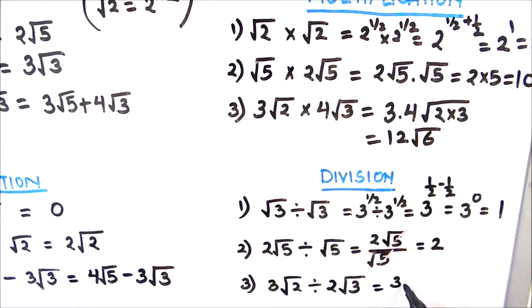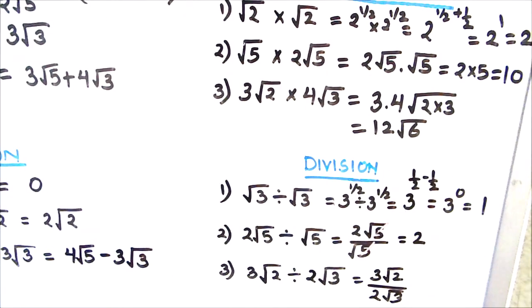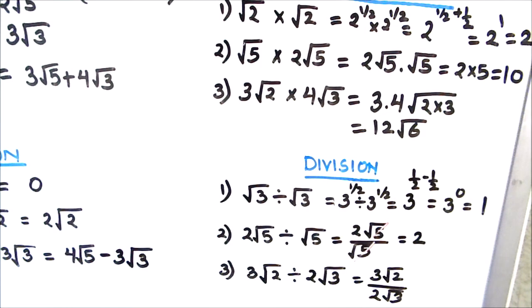The next one is 3 root 2 divided by 2 root 3. Here we cannot cancel the numbers outside or inside, so the answer stays as 3 root 2 divided by 2 root 3. One more thing: we cannot leave a root in the denominator. There is a process to convert the denominator into a number without roots, called rationalization of roots, which we will learn in further videos. For now we have completed the division of two roots.